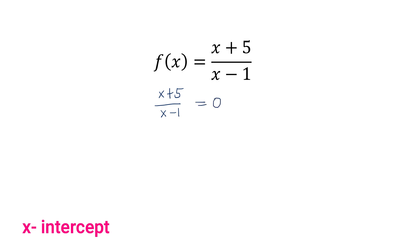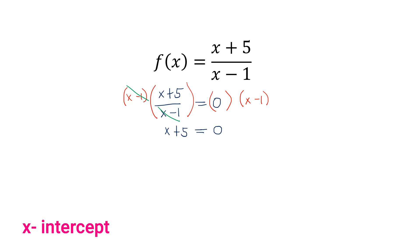By MPE, or multiplication property of equality, we multiply both sides by (x − 1). This cancels out the denominator, leaving x + 5 on the left side and 0 on the right side, since 0 multiplied by any number is 0. This can also be done through cross-multiplication: x + 5 times 1 equals x + 5, and (x − 1) times 0 equals 0. Then by APE, or addition property of equality, we get x = −5.